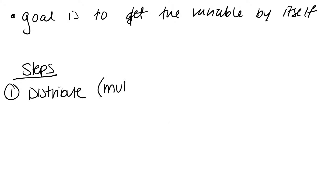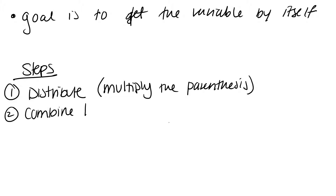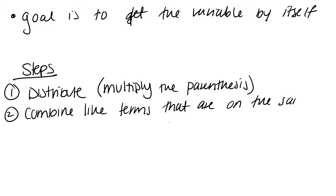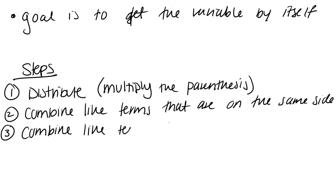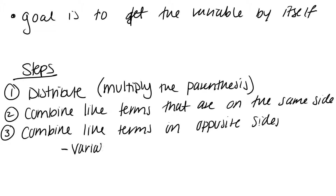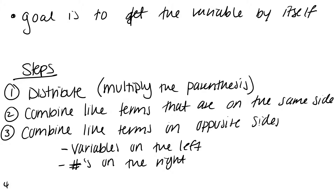Distributing means we're going to multiply the parentheses. Then we're going to combine like terms that are on the same side. Then we're going to combine like terms on opposite sides — opposite sides of the equal sign. An easy way to remember is to put the variables on the left and the numbers on the right. And then your last step is to divide.